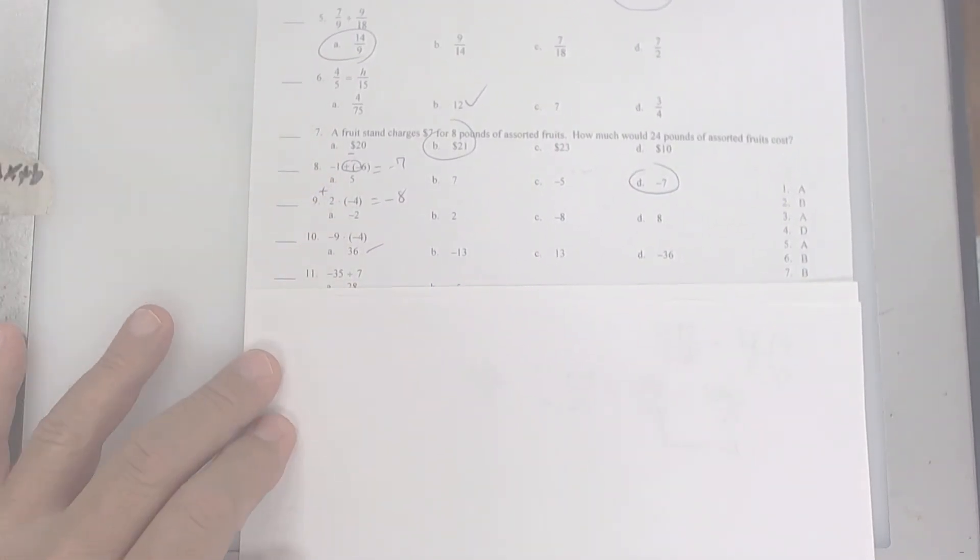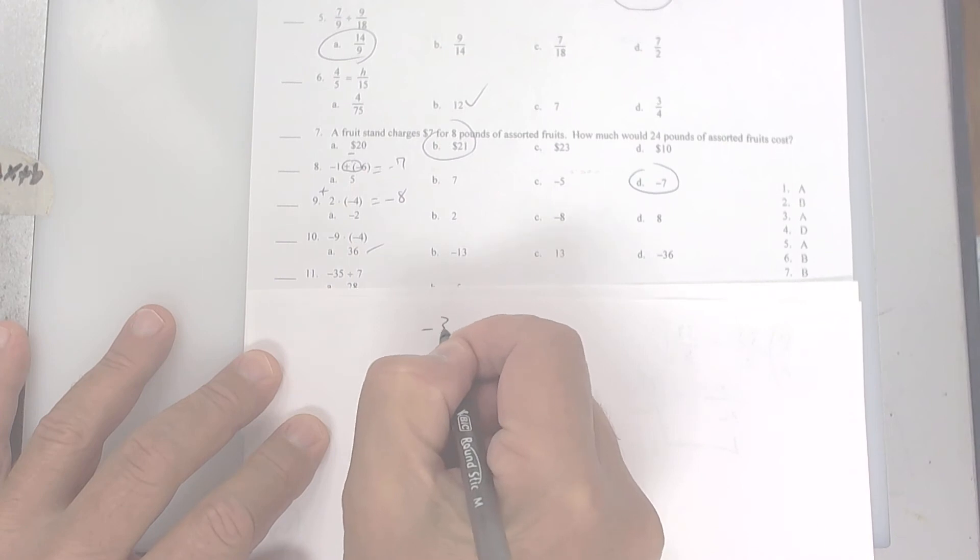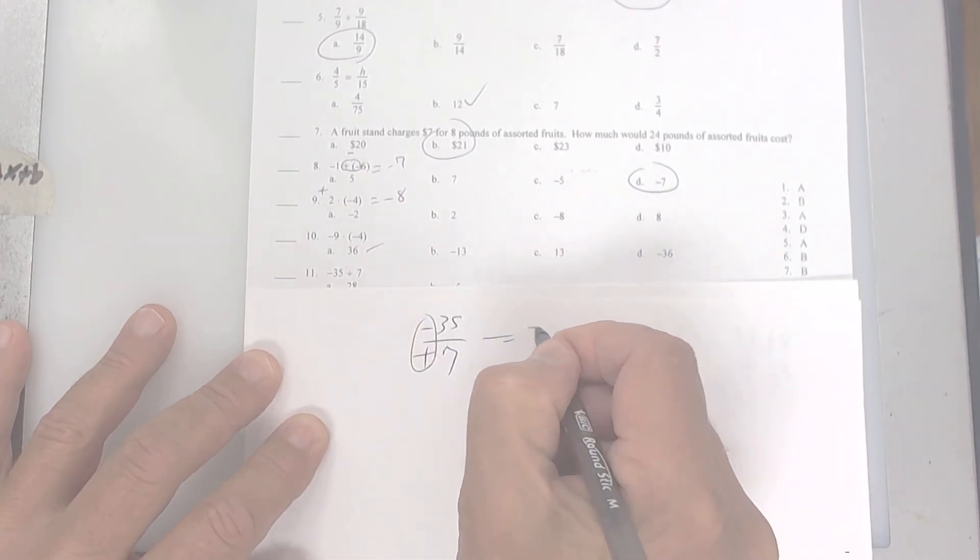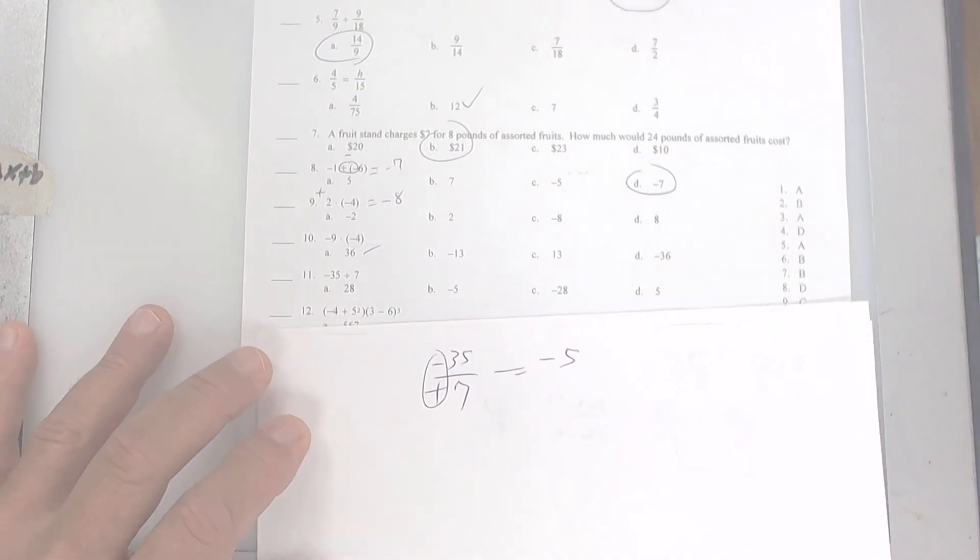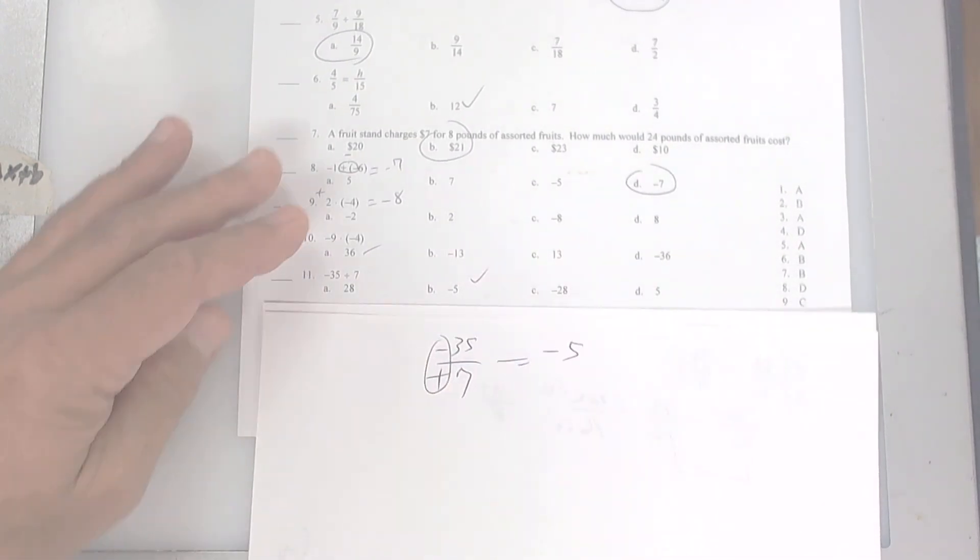This one right here, you're dividing. So negative 35 divided by 7. You have one negative, so it's going to be a negative 5 is what I'm looking for. And there it is. Let's keep moving.